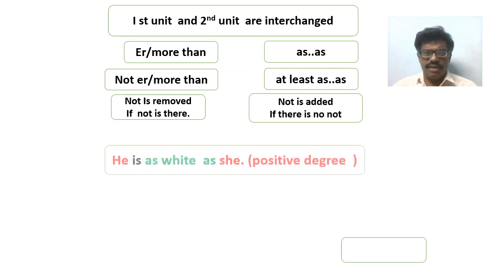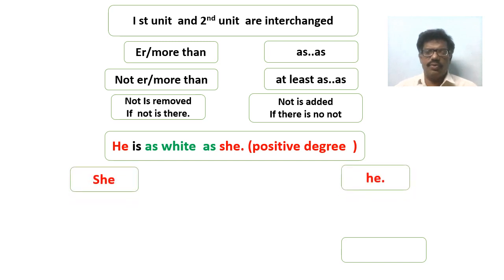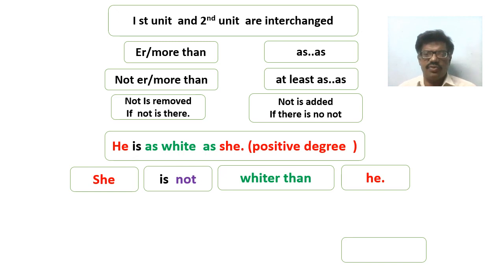Now let us see one more example. 'He is as white as she' — it is in positive degree, we have to change it into comparative degree. First rule: interchange unit one and unit two — 'he' and 'she' are interchanged. In the question there is 'as...as', so we write 'than' — we have written 'whiter than'. Next, there is no 'not' in the sentence, so we add it. The answer is: 'She is not whiter than he'.